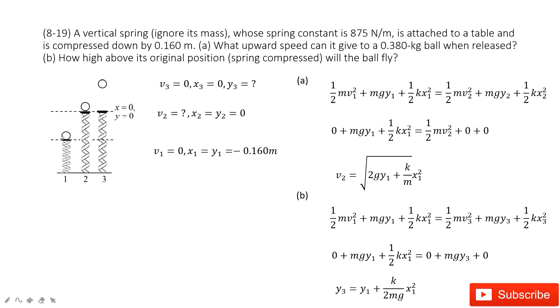The ball compresses the spring. So x1 equal to y1 equals negative 0.16 meter. This is the given quantities. It is compressed.